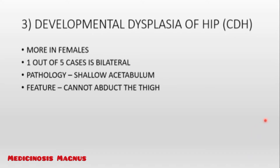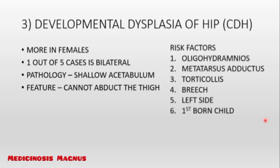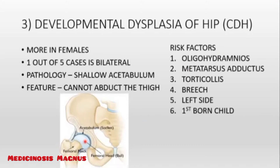The patient cannot put the thighs far apart from each other. The risk factors for DDH include oligohydramnios, metatarsus adductus, torticollis, and breech presentation. DDH is seen mostly on the left side, and first-born children are usually affected. Normally, the acetabulum is curved and the femoral head fits in, but in this disease the acetabulum is shallow or flat, so the femoral head slips through.